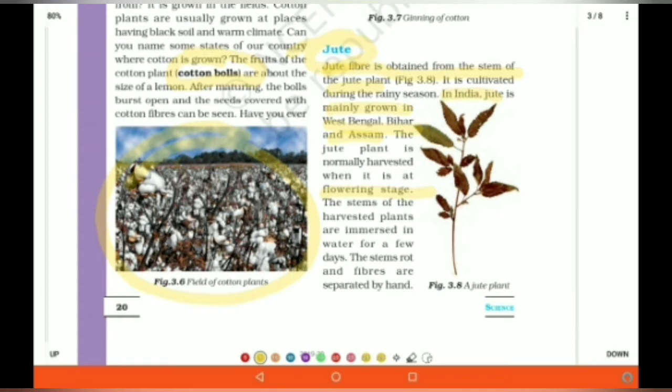And the stem rot. The stems are, what they do, how we obtain jute is, the jute stems are submerged or simmered in water for a few days. Then, when the stems rot, the fibers are separated with hand.